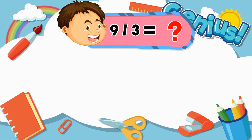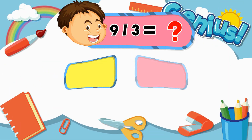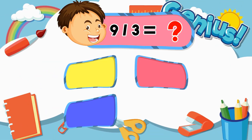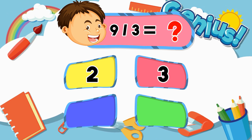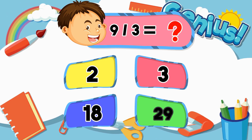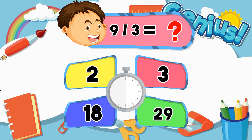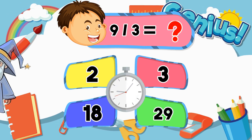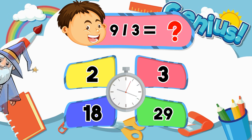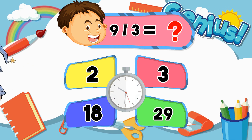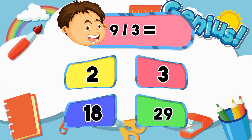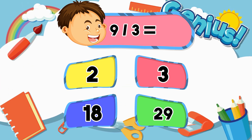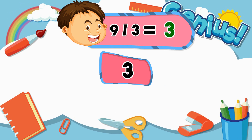What is 9 divided by 3? 2, 3, 18, 29. [Answer:] 3.